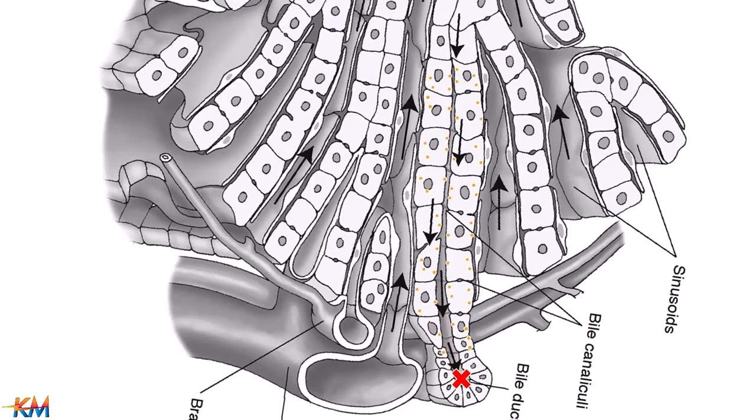If there is obstruction in bile flow, which is called cholestasis, bile is accumulated in biliary tract.